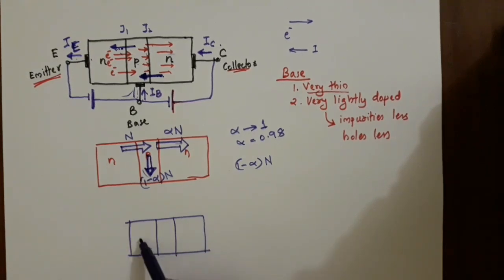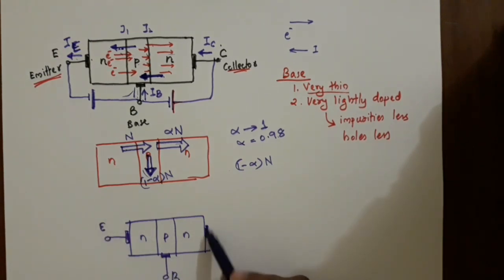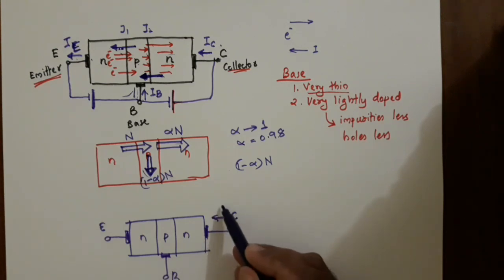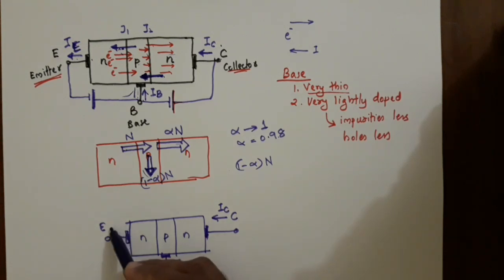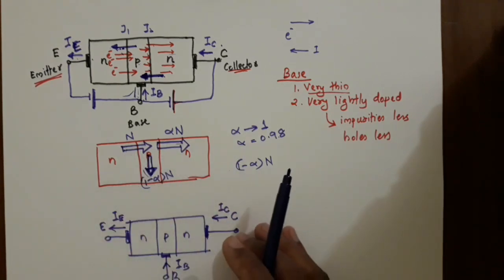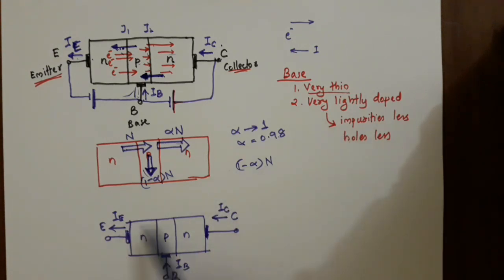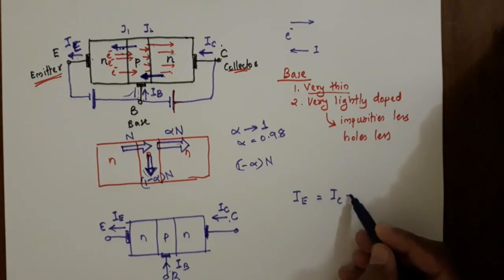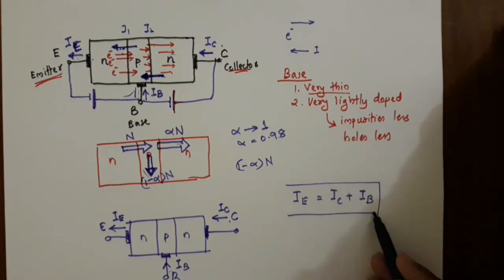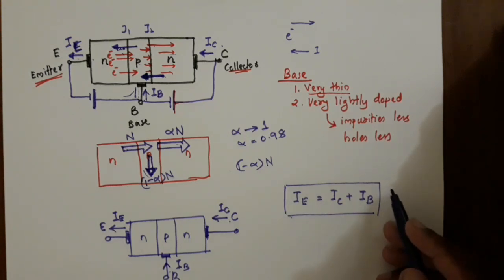IC flows into the collector and IB flows into the base, while IE flows out of the emitter terminal. To satisfy conservation of charge — Kirchhoff's Current Law — the sum of incoming currents equals the outgoing current: IE = IC + IB.